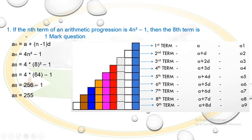Keep this in mind to solve any arithmetic progression problem. To find the nth term we use the formula: aₙ = a + (n-1)d. Here, aₙ is already given as 4n² - 1, so a₈ = 4×(8²) - 1 = 4×64 - 1 = 256 - 1 = 255. We'll move on to the next problem.